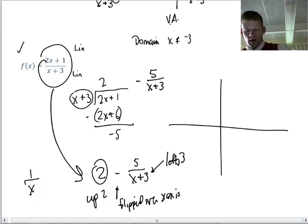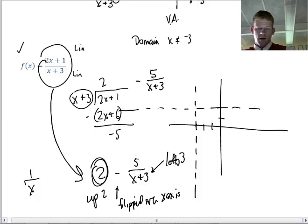So if I go left 3, here's my asymptote. It's been moved up 2, so up 2 is where my horizontal asymptote is gone.